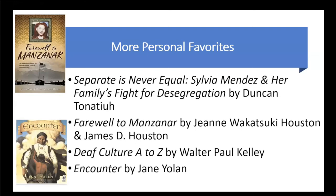Encounter is a historical fiction set in 1492, when Christopher Columbus landed on the island of San Salvador and encountered the Taino Indians. It is told from a young Taino boy's point of view and how he tried to warn his people against welcoming the strangers, who seemed more interested in gold than friendship. It exposes the destruction of the Taino people and their culture by the colonizers.